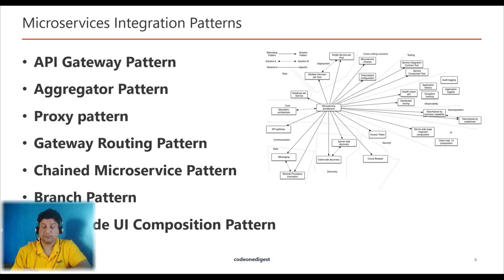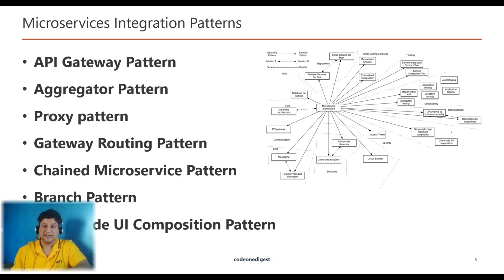The first is the API Gateway Pattern, which helps address many concerns raised by microservice implementation like single entry point, proxy service, aggregated results, and security. The second is the Aggregator Pattern, which talks about how to aggregate data from different services and send a final response to the consumer. Third, we have the Proxy Pattern, which allows API features such as security and categorization to be grouped into a gateway.